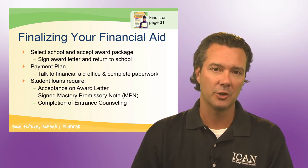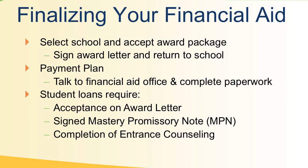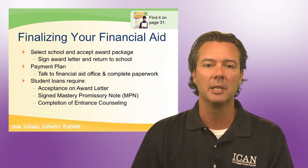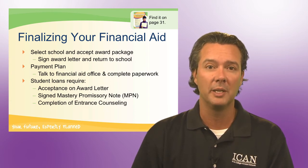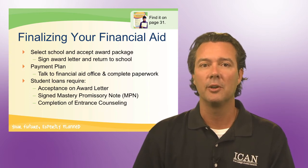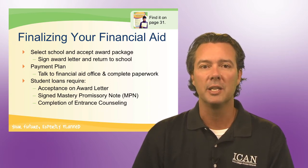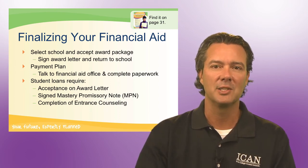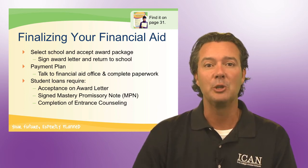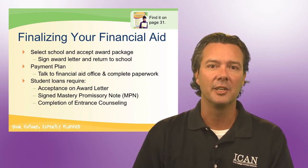Once you've made the decision on which college you're going to, you need to finalize your financial aid with that college. That might include signing your award letter and getting it back to them — a lot of colleges handle this online electronically. If you need to take out student loans, the best loans available first will be the Federal Stafford loans, and you'll need to sign a master promissory note. The colleges will give you that information. There will also be entrance counseling, walking you through the basics that you are borrowing this money and do have to pay it back, ensuring you know the terms before signing the promissory note.